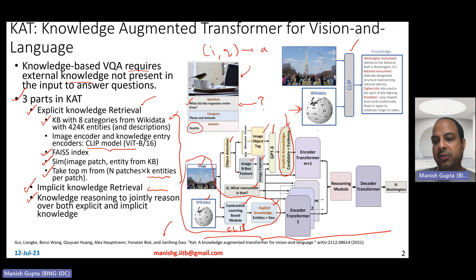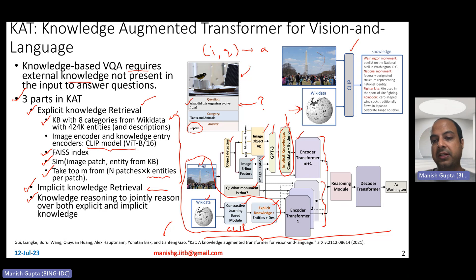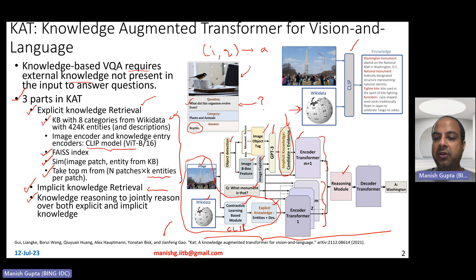You take these two knowledge pieces — implicit and explicit knowledge — and encode them separately using the transformer encoder. You have multiple inference passes on top of the transformer encoder, so as to encode each of these pieces separately. On top of that, you have a reasoning module and then a decoder. The reasoning module combines these encoded knowledge pieces using cross-attention, and that's what finally generates the final answer.